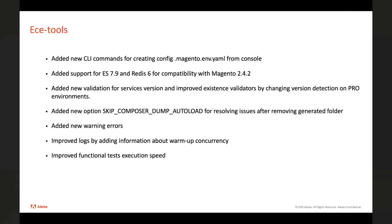I'm going to start from ece-tools. We added a new CLI command for creating a config file called magento.yaml from the console. We added support for Elasticsearch 7.9 and Redis 6 for compatibility with Magento 2.4.2 — it's for the upcoming release so we want to be compatible with it. We added new validation for service versions and improved existing validators. We also added a new option: keep-composer-dump-autoload, for resolving issues with the generated folder.